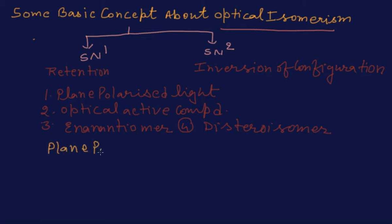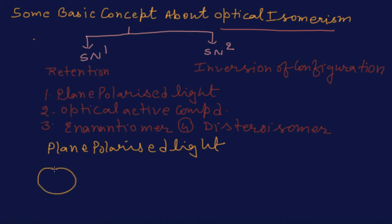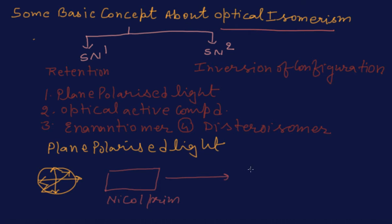Plane polarized light — when we take simple light, it goes in all directions. But when this light is passed through a nickel prism, we will get light that is unidirectional, that is rotating in one direction. Now you can understand that this is what plane polarized light means.